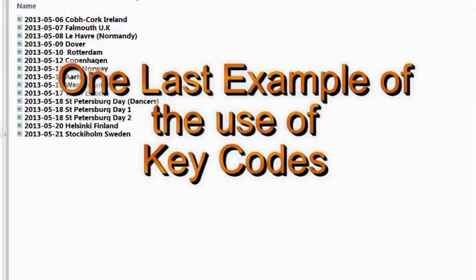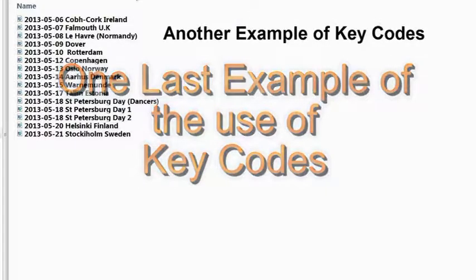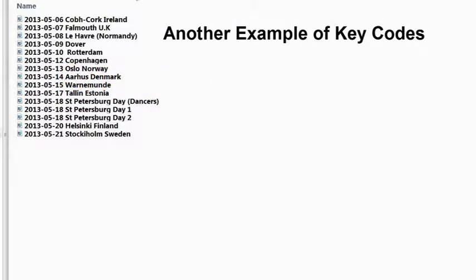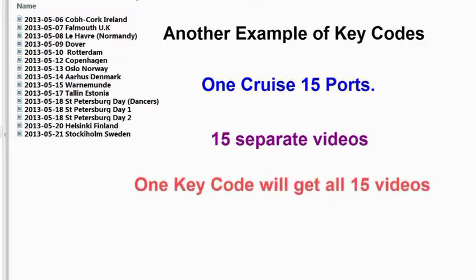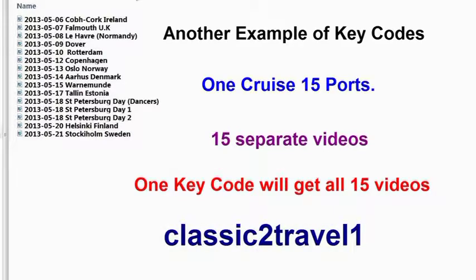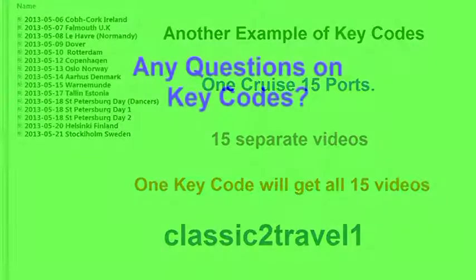One last example of the use of key codes. This was a single cruise with 15 ports — I made a video for each port. So by using a key code called 'Classic Two Travel One,' all one word, a person can get all 15 ports.